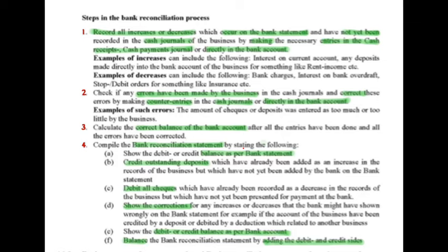There are four easy steps to keep in mind when doing bank reconciliation. Step one: record all increases or decreases which appear on the bank statement but have not yet been recorded in the cash journals of the business, by making the necessary entries in the cash receipts or cash payments journal. Alternatively, you can make entries directly in the bank account. Examples of an increase include interest on a current account, deposits made directly into the business bank account, or rent income.